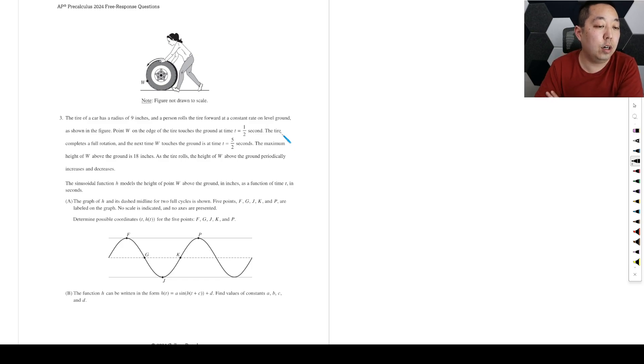The tire of a car has radius nine inches and a person rolls the tire forward at a constant rate on level ground. Point W at the edge of the tire touches the ground at time t equals 0.5 seconds. The tire completes a full rotation. The next time it touches the ground is five halves seconds. The maximum height W of the ground is 18 inches. As the tire rolls, the height W above the ground periodically increases and decreases. The sinusoidal function H models the point W above the ground in inches as a function of time in seconds. The graph of H and its dash midline for two full cycles is shown.